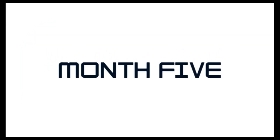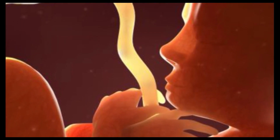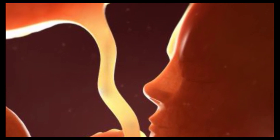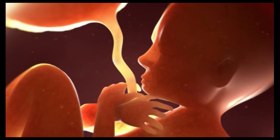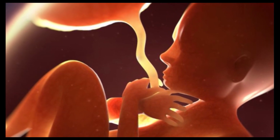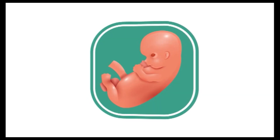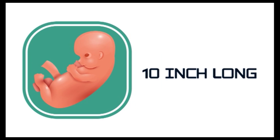Month 5: Hair on the head begins to grow. We can feel the baby's movement. The first movement is called quickening and can be felt like a flutter. By the end of month 5, the baby is 10 inches long.